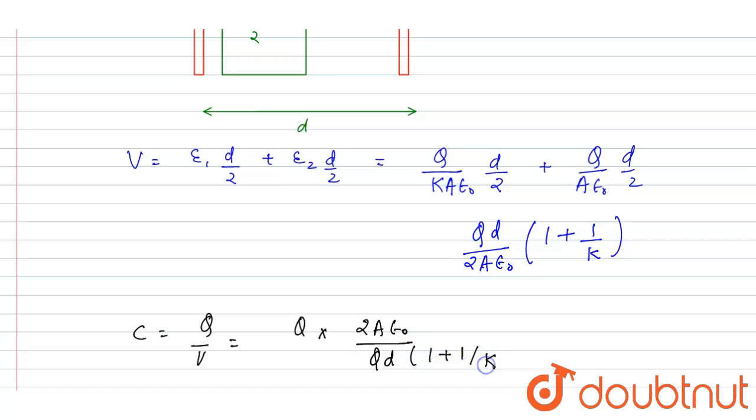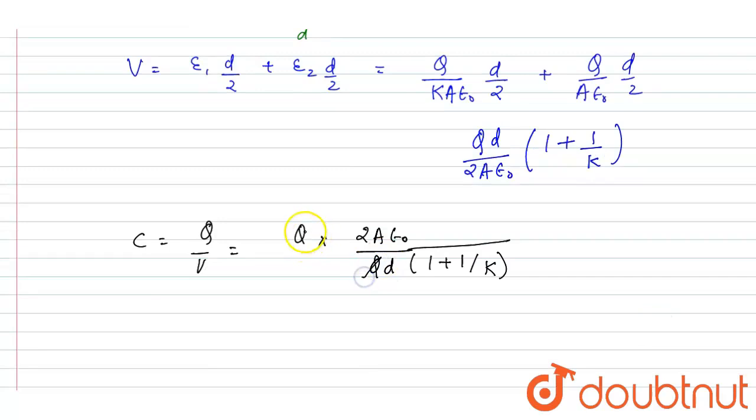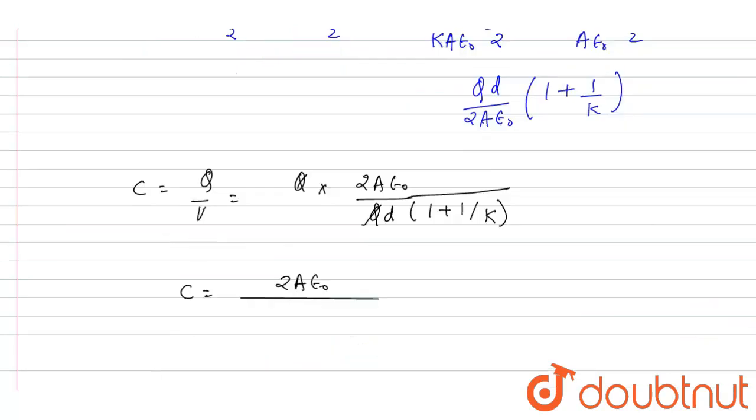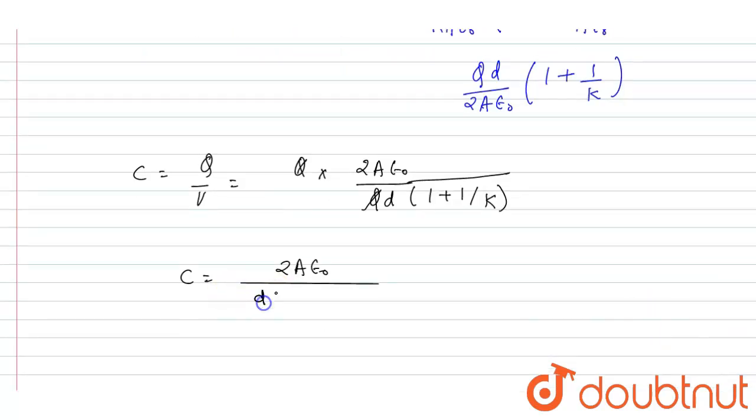1/k plus 1. This Q will get cancelled out, and I will write C is equals to 2·A·ε₀ divided by d times (1 + 1/k). This will be the capacitance of the capacitor and the answer to this question.